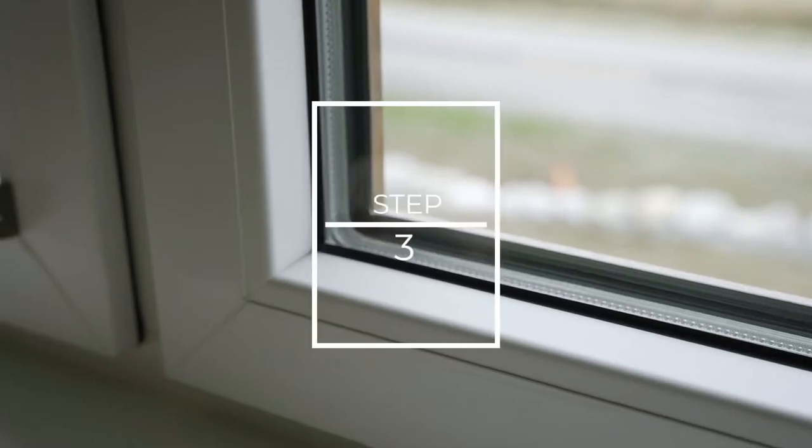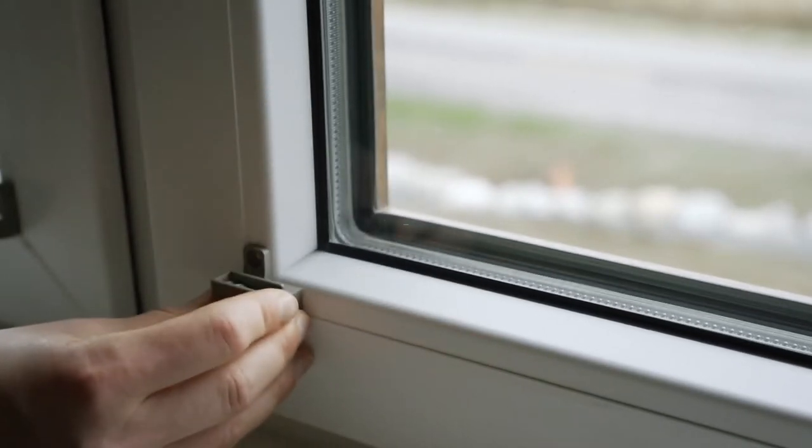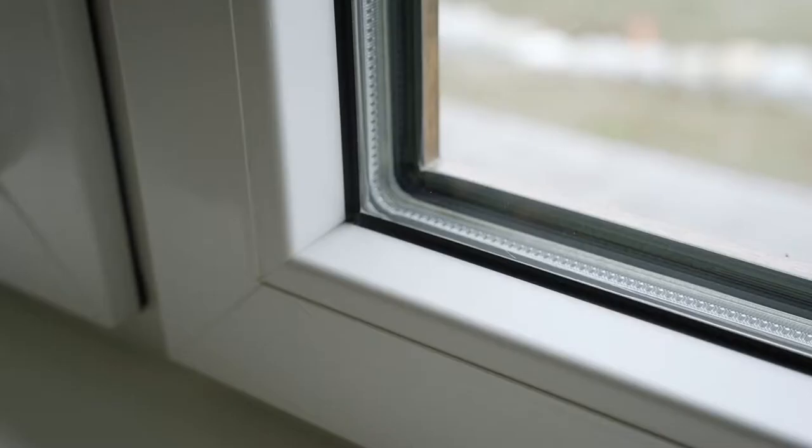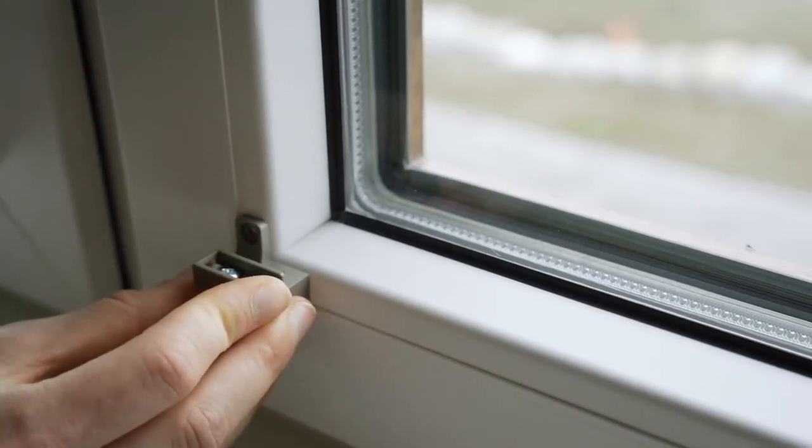Step 3. Position your glazing bead mounting bracket at the face of the inner corner of the window frame, also called the glazing stop or bead.